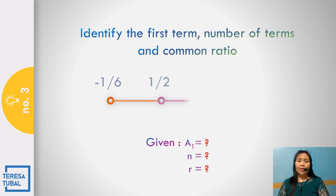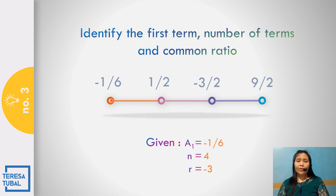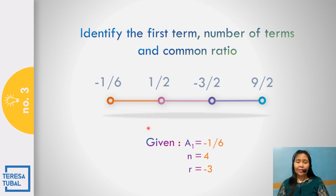How about number 3? In the geometric sequence negative 1/6, 1/2, negative 3/2, 9/2 — the first term is negative 1/6, the number of terms is 4, and the common ratio is negative 3. This is because 1/2 divided by negative 1/6 equals 1/2 times negative 6, which is negative 6 divided by 2, equal to negative 3.